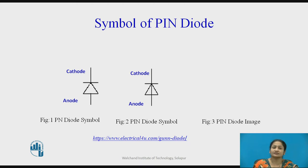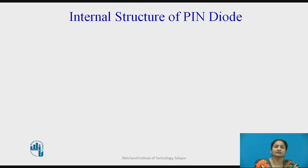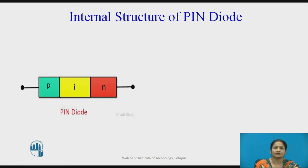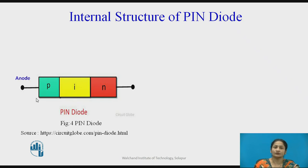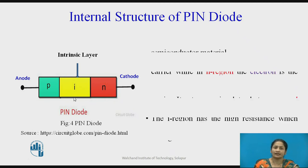The PIN diode also has two terminals: cathode and anode. The physical structure or physical appearance of the PIN diode is shown in figure 3. This is a PIN diode image. Let us now see the internal structure of the PIN diode. As denoted by its name, it is a PIN diode — meaning there are N-type and P-type materials. Between these two, there is an intrinsic layer, with anode and cathode terminals, and the intrinsic layer sandwiched between the P-type and N-type material.